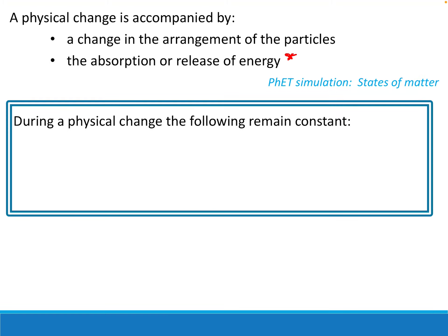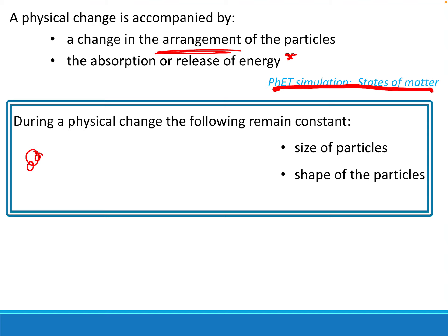It's worth going to the PhET website - there's a simulation called 'States of Matter' which helps you see the difference in the arrangement of the particles. During a physical change, the following stays the same: the size of the particles, the shape of the particles - water particles always look like Mickey Mouse ears and that never changes - and the number of particles. If you start with a million water particles, you have a million afterwards.